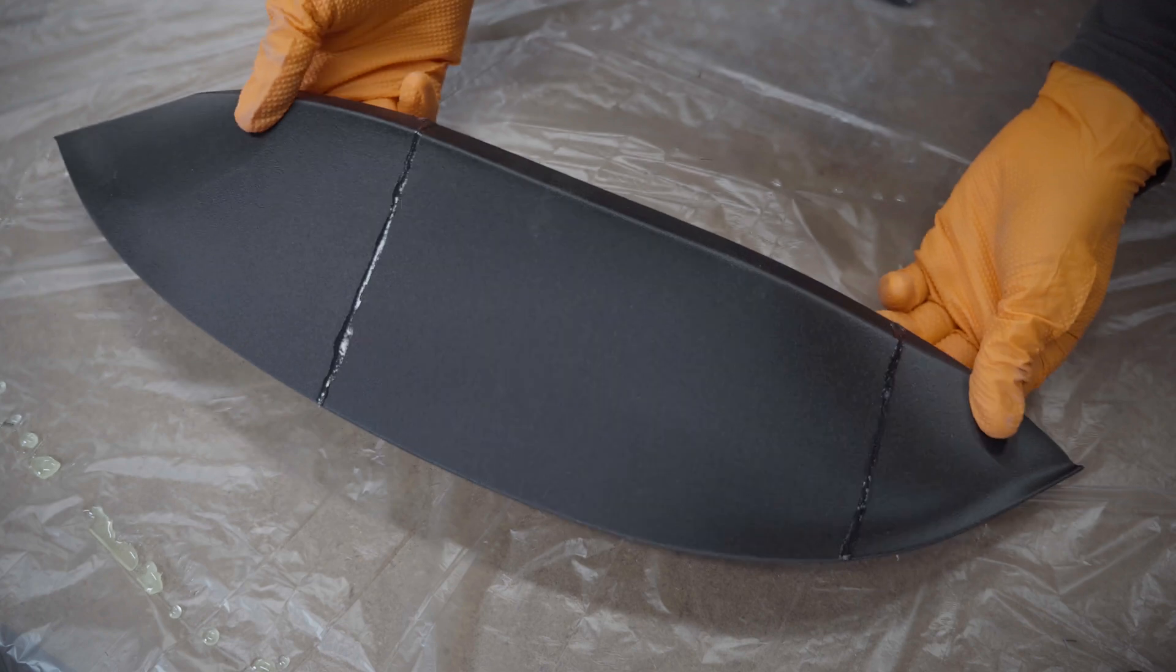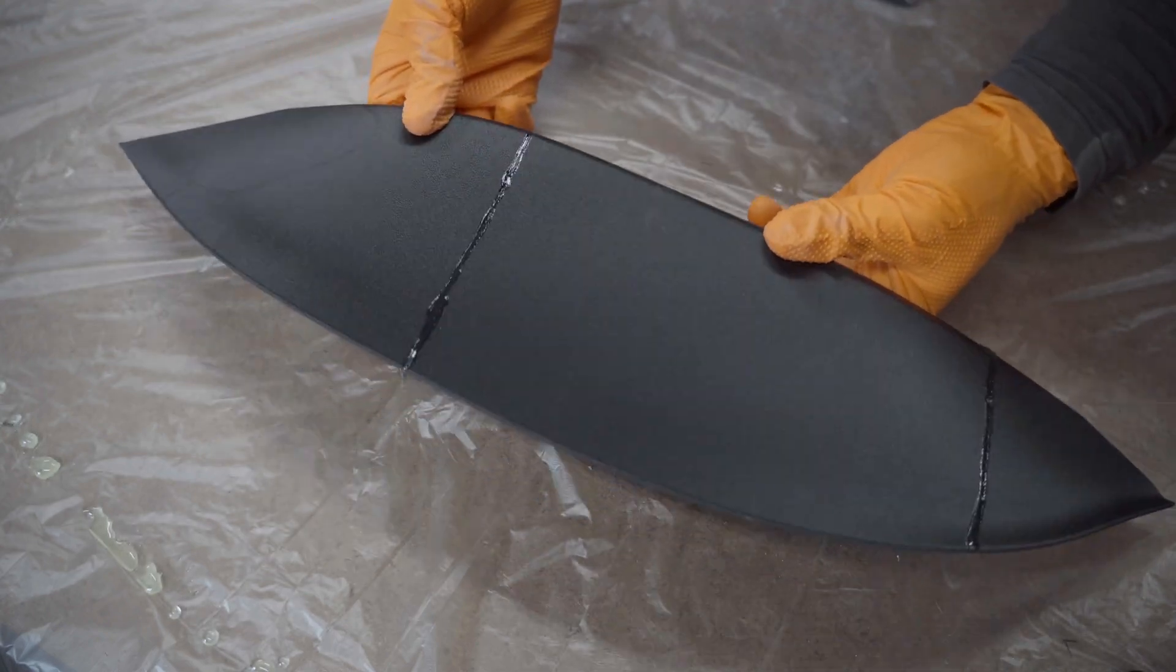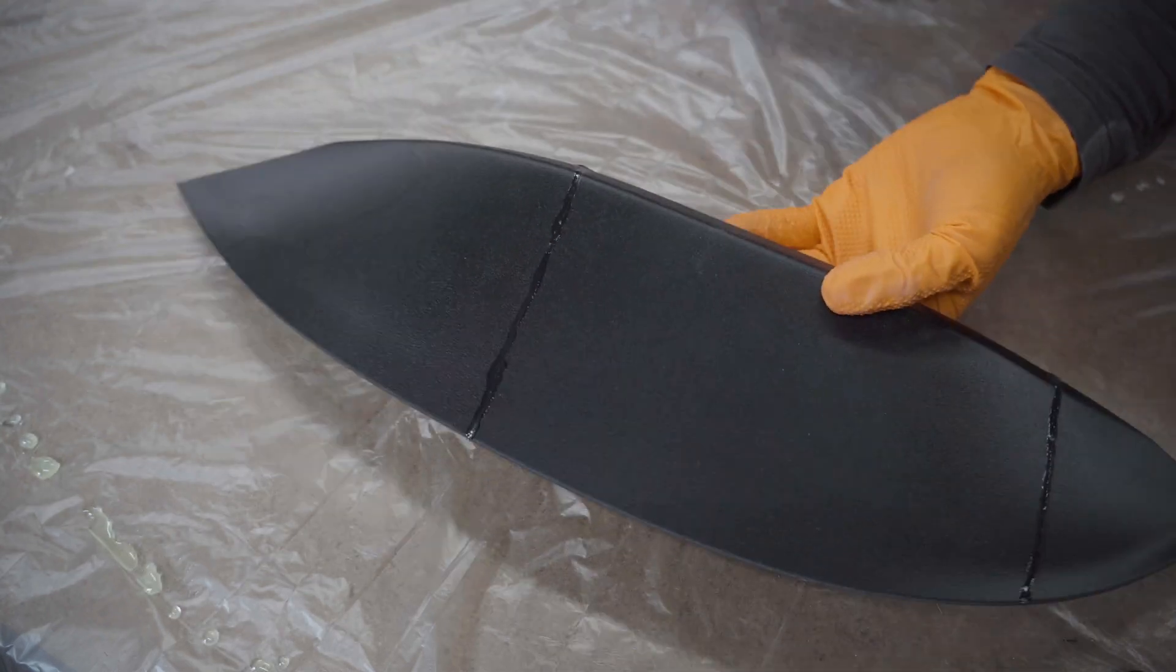Once all the pieces were joined, I sanded both sides with 80 grit sandpaper to smooth everything out, and also key the surface so the epoxy can have a good mechanical bond.